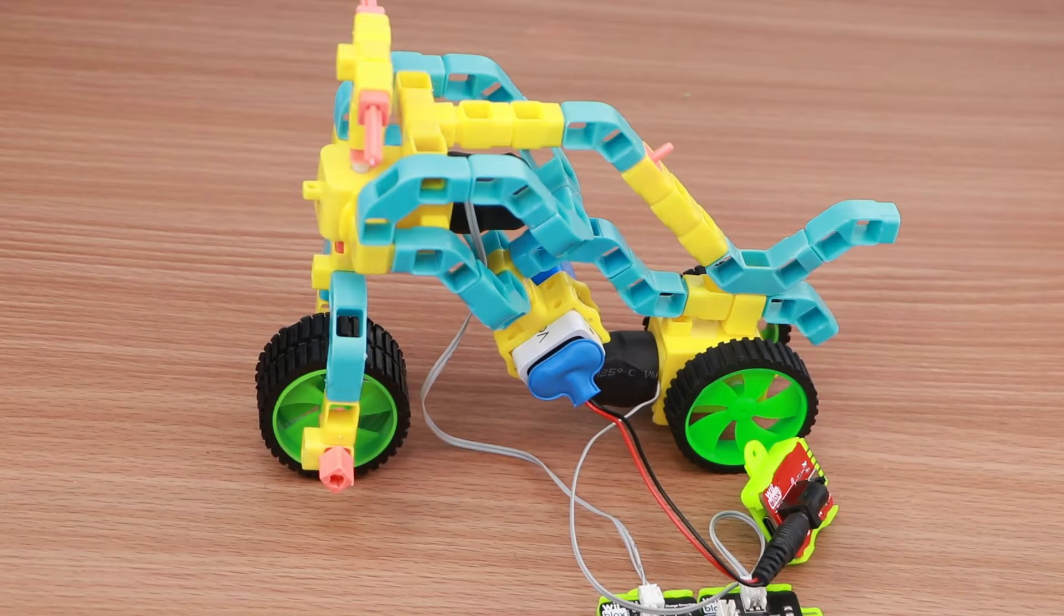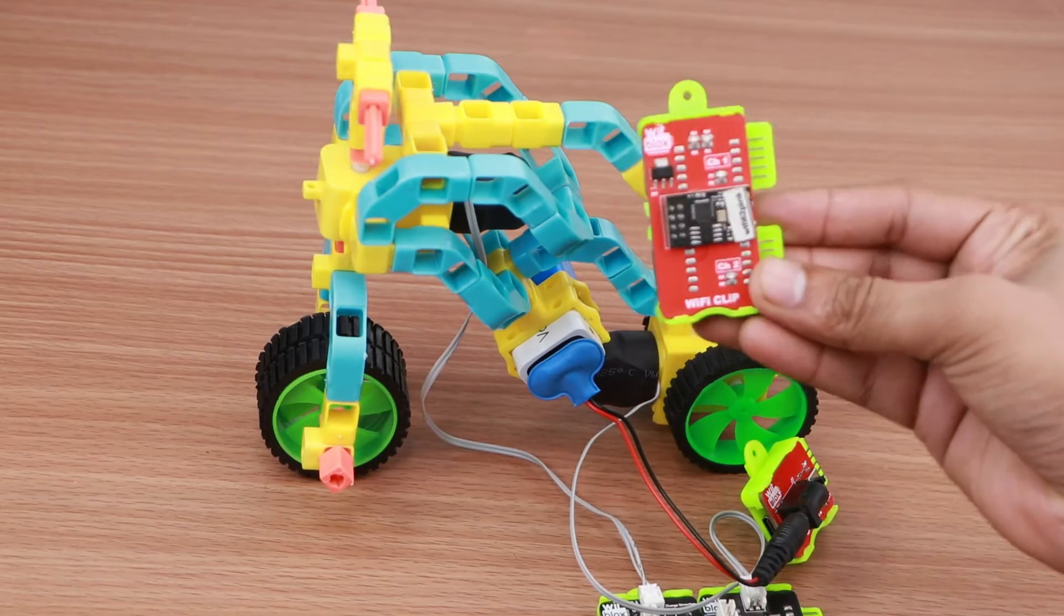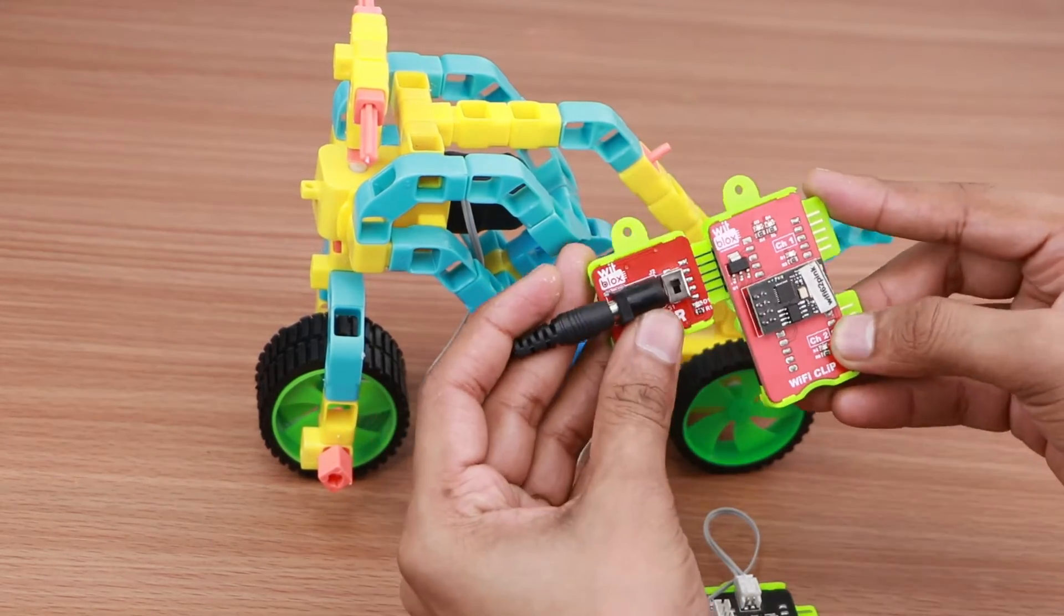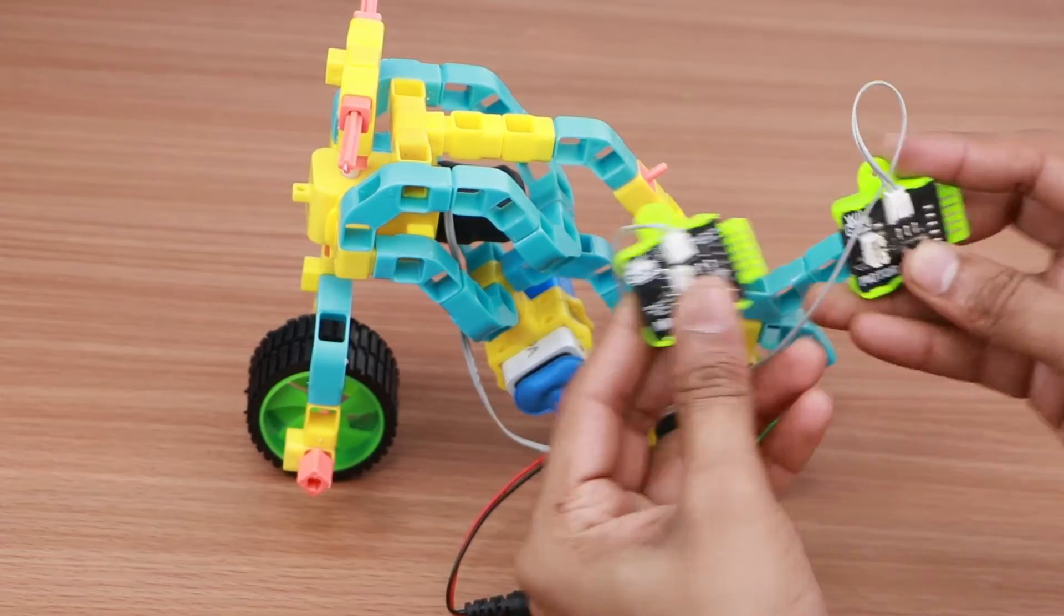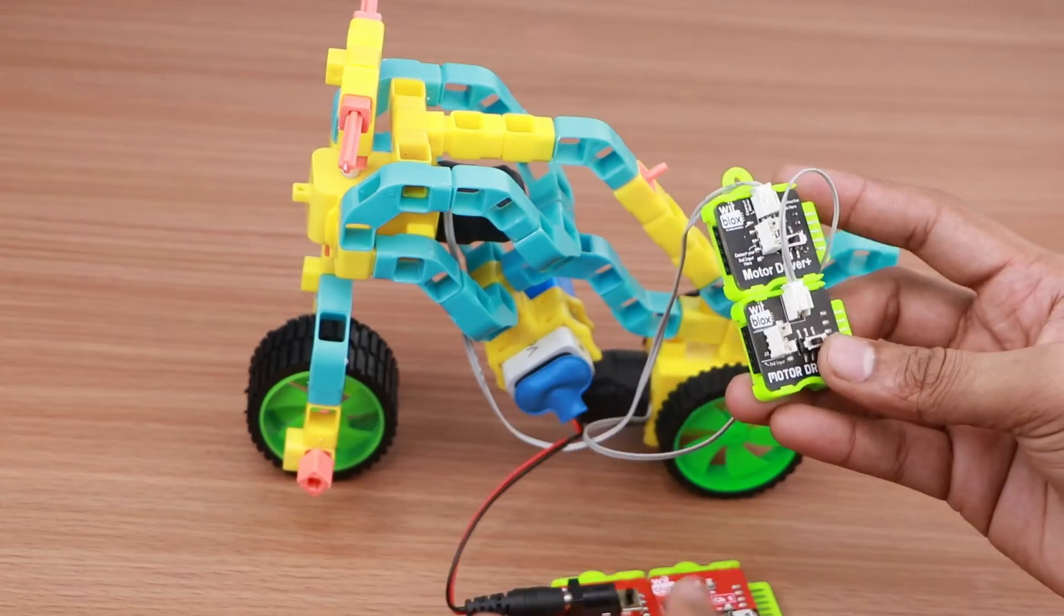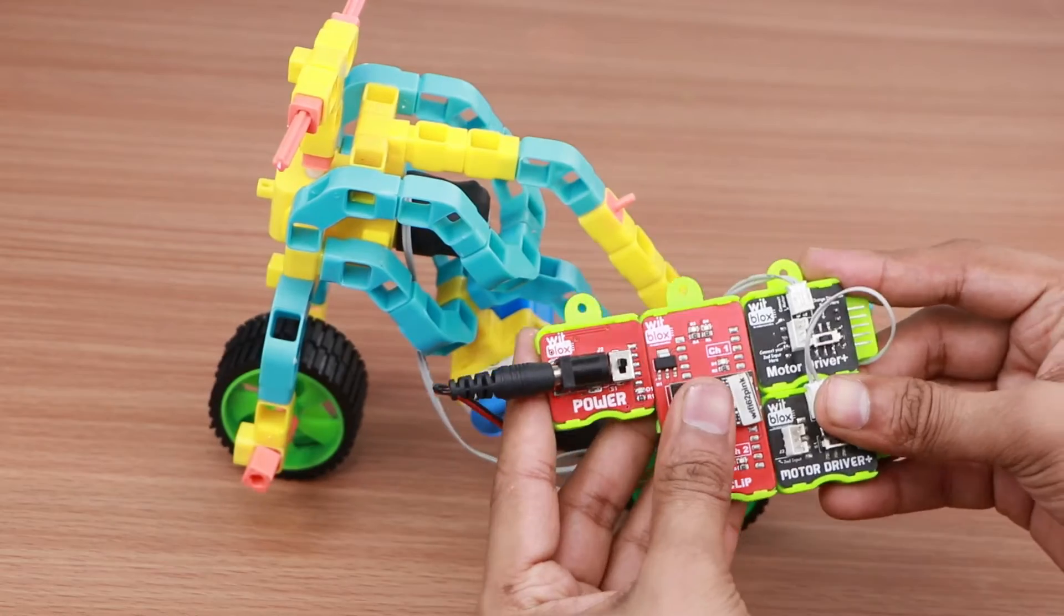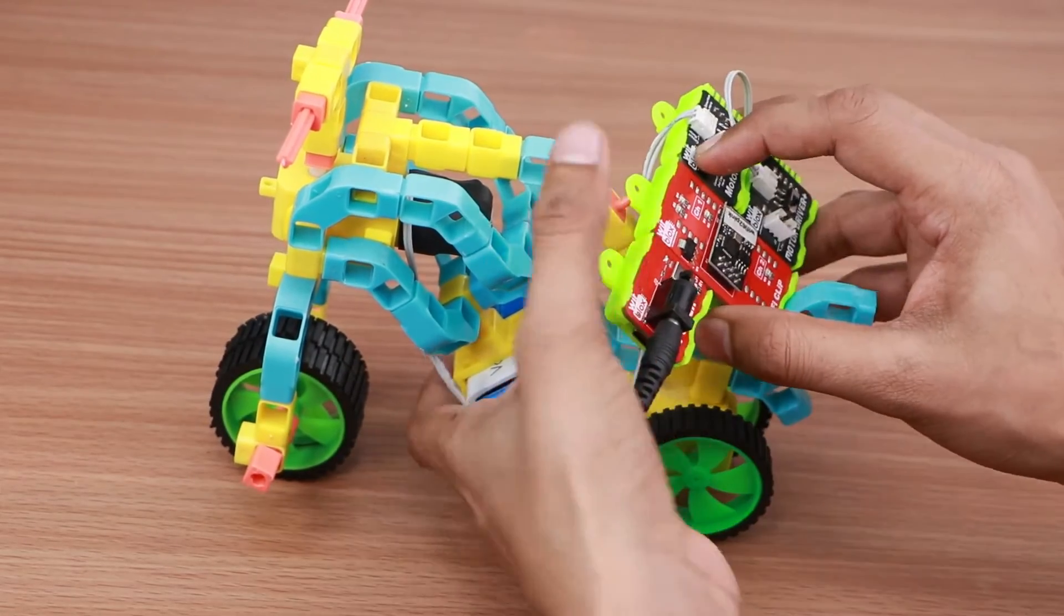The last step is to create the logic for the bike's working. First, connect the power blocks to the Wi-Fi two-channel blocks. Next connect the two motor driver blocks in vertical manner and then connect them to the Wi-Fi blocks as shown. This completes the logic part.